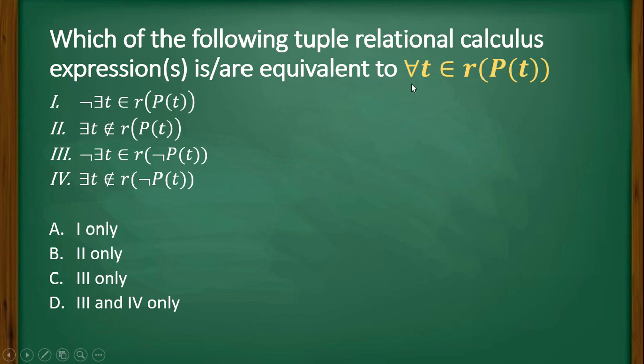we are saying that all t exist there, or there exist all the t belongs to r where predicate is true. Here we are saying that no t exists in the relation where the predicate is not true. These two things are equivalent